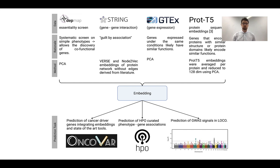Underneath, we see the rationale for doing this and the method we use to embed this data. In the lower half, we see several prediction tasks which we use to evaluate our embeddings and which are example applications: on the left, the prediction of cancer driver genes; in the middle, the prediction of HPO phenotype-associated genes; and on the right, the prediction of GWAS signals in a leave-one-chromosome-out cross-validation.